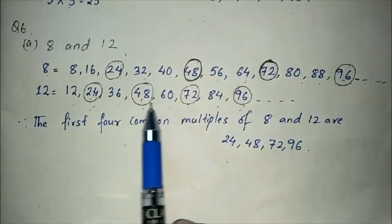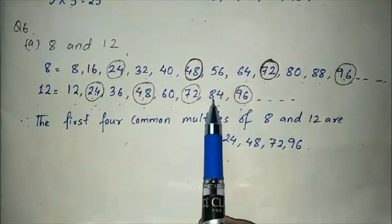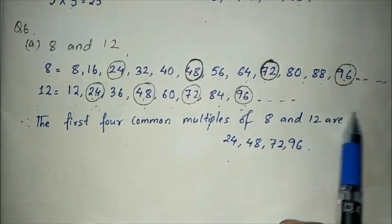Now multiples of 12 are: 12, 24, 36, 48, 60, 72, 84, 96 and so on.